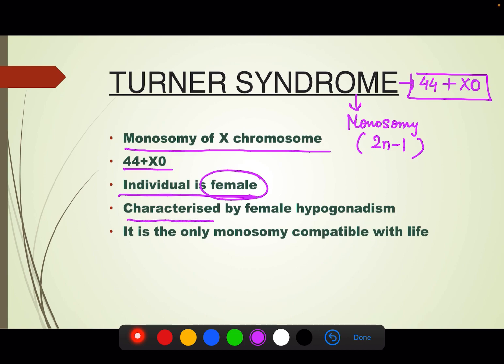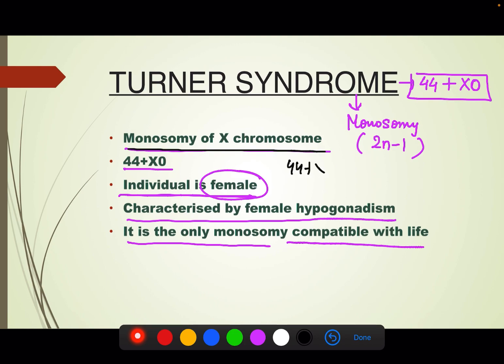It is characterized by female hypogonadism. To summarize: Turner's syndrome is monosomy of the X chromosome, the genotype is 44 plus X0, the individual is female, it is characterized by female hypogonadism, and it is the only monosomy that is compatible with life.